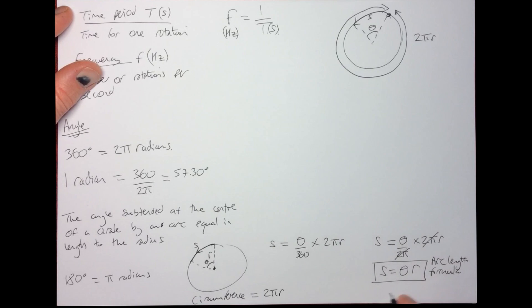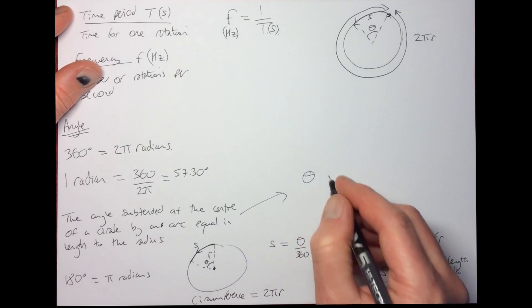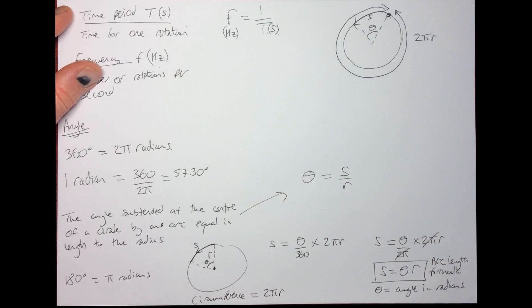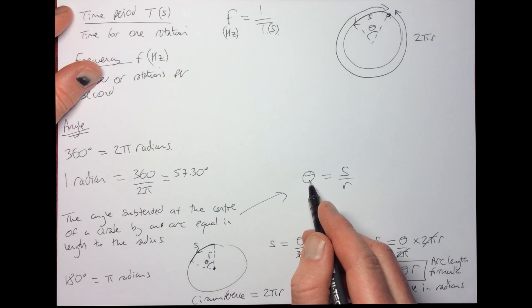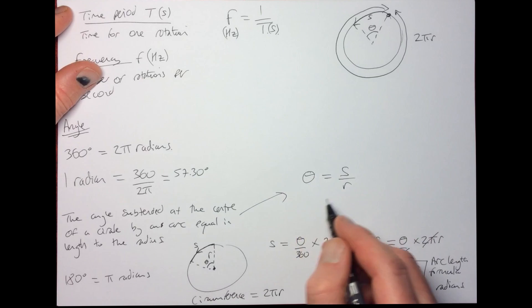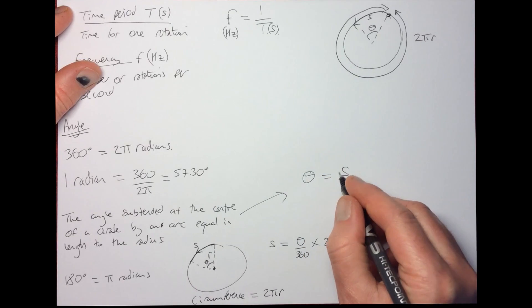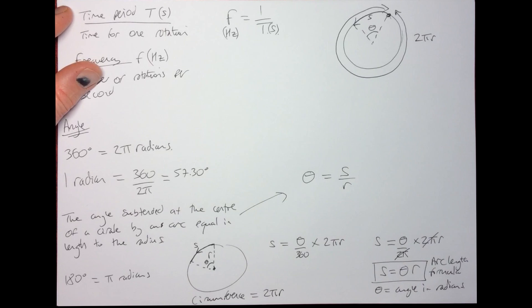Where theta is the angle in radians. From that formula, the definition of the radian comes: the angle theta in radians equals s over r. So one radian is when s divided by r equals one - meaning s and r must be equal. This is the angle subtended at the center of a circle by an arc equal in length to the radius.